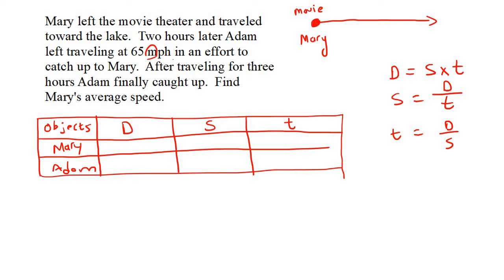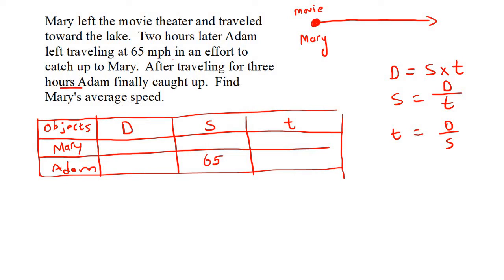So we know Adam can drive at 65, and we go fill that in. The next thing we know is Adam's time — how long does Adam drive for? It says after traveling for three hours. So Adam has been traveling for three hours. Now some of you might say, 'shouldn't we say five hours because he left two hours later?' But when they say time, they mean how long did Adam actually travel for. He waited two hours and then drove for three hours — so he's been driving for three hours in total.